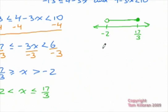If we were going to write this in interval notation, it would be from negative 2 all the way up to 17 thirds included. So, we need to put a bracket.